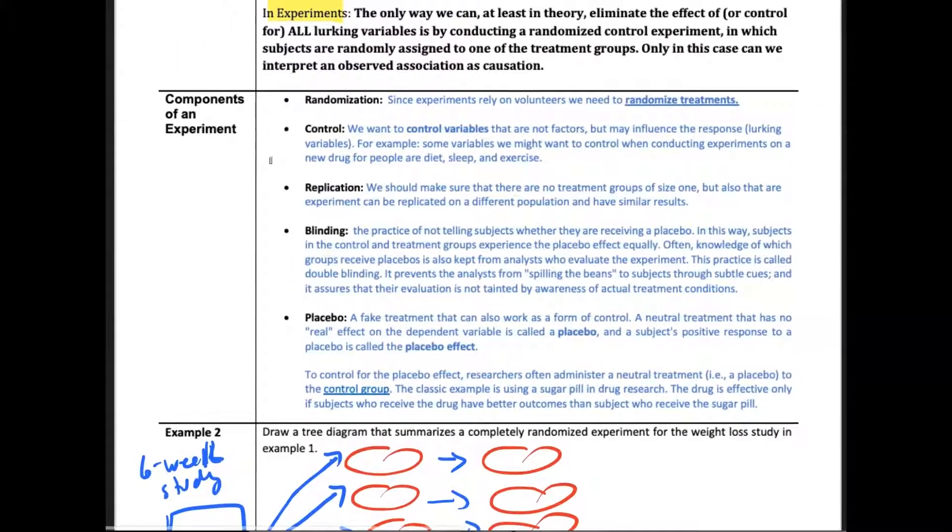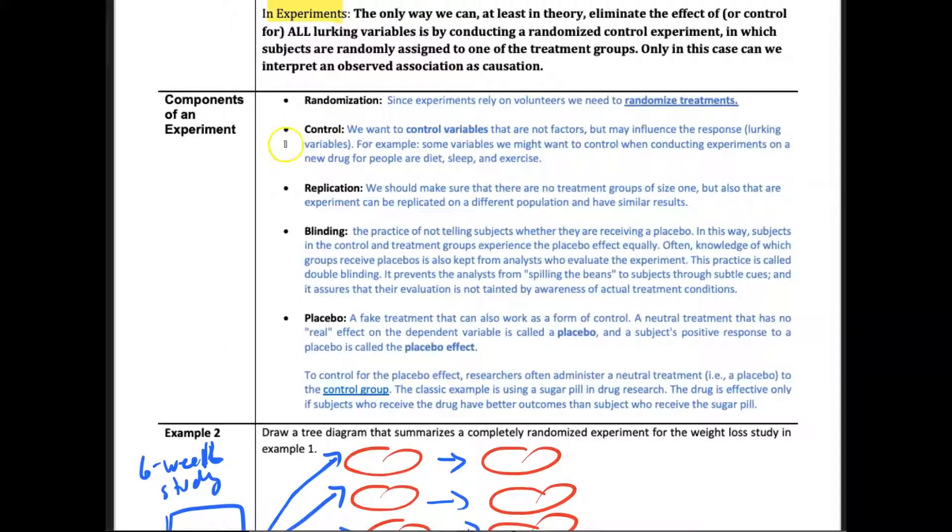As we think about experiments and the importance of being able to conclude causation, there are some components of an experiment that we need to think about, and they're listed here. Again, in this class we don't get to do experiments, but you need to be aware of them. We're going to read about them.